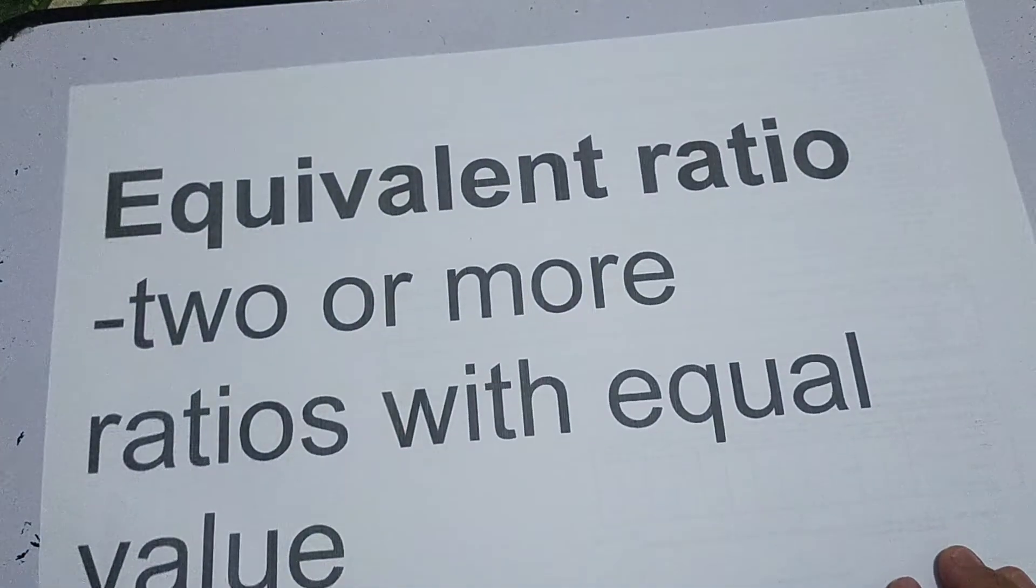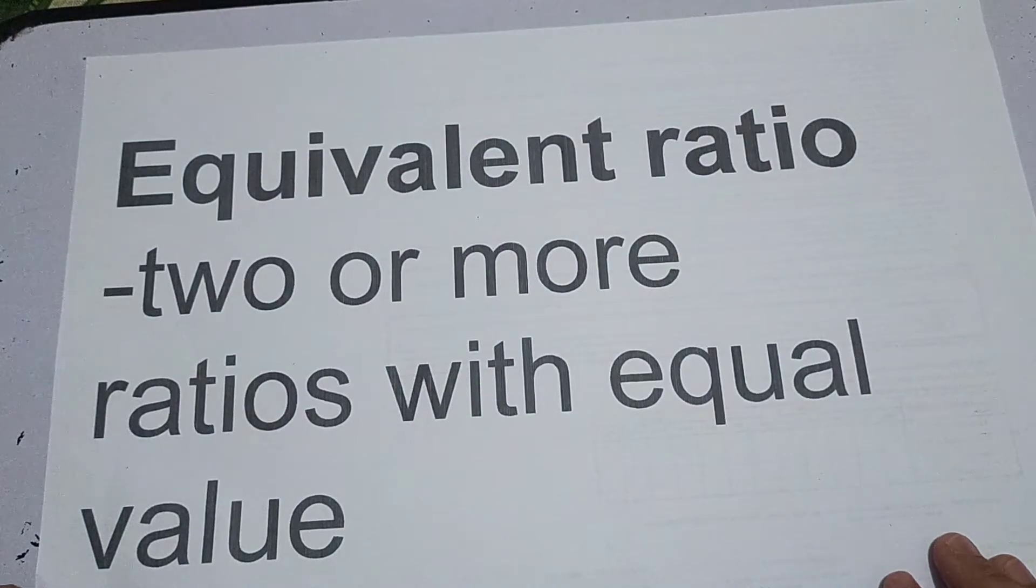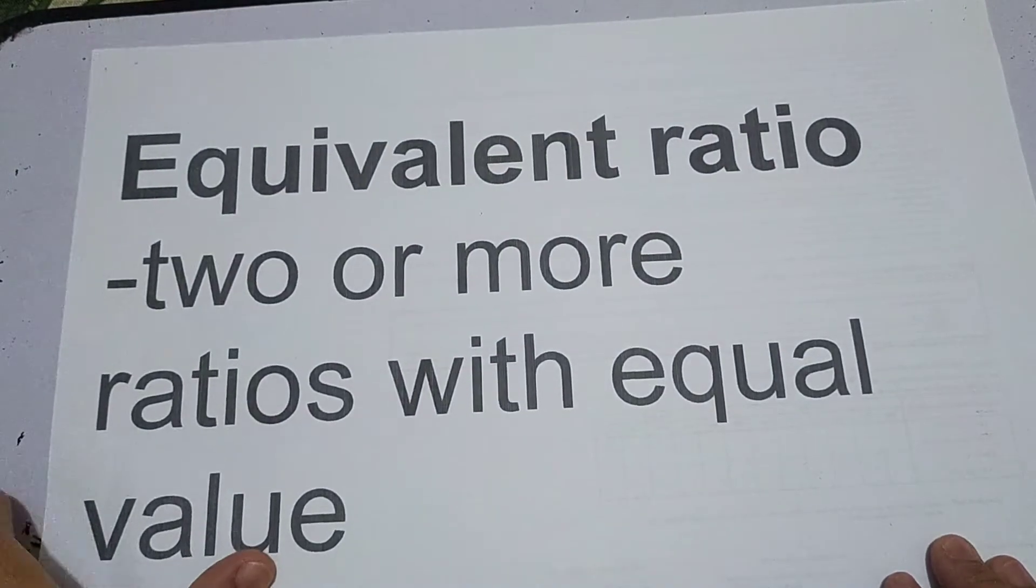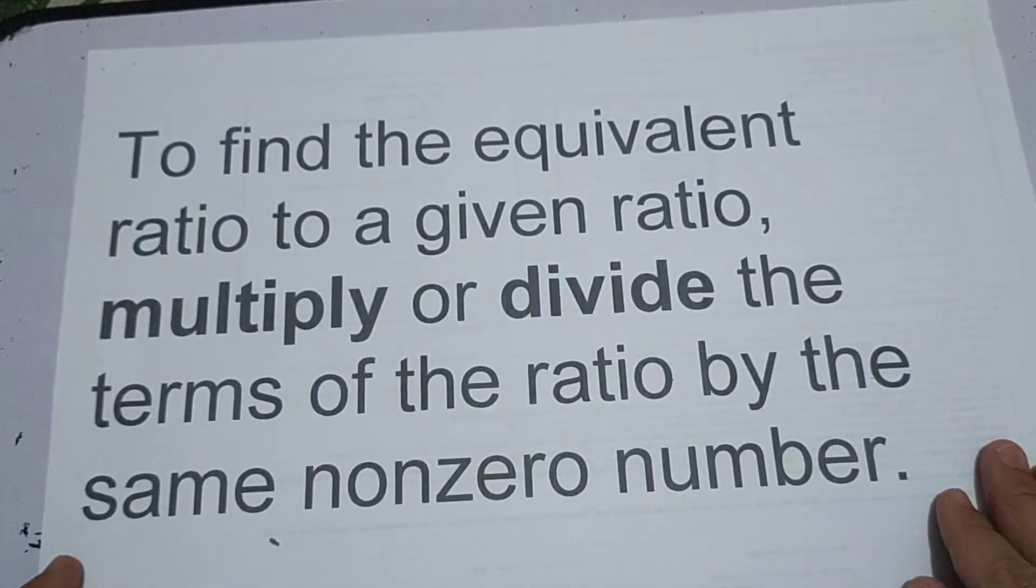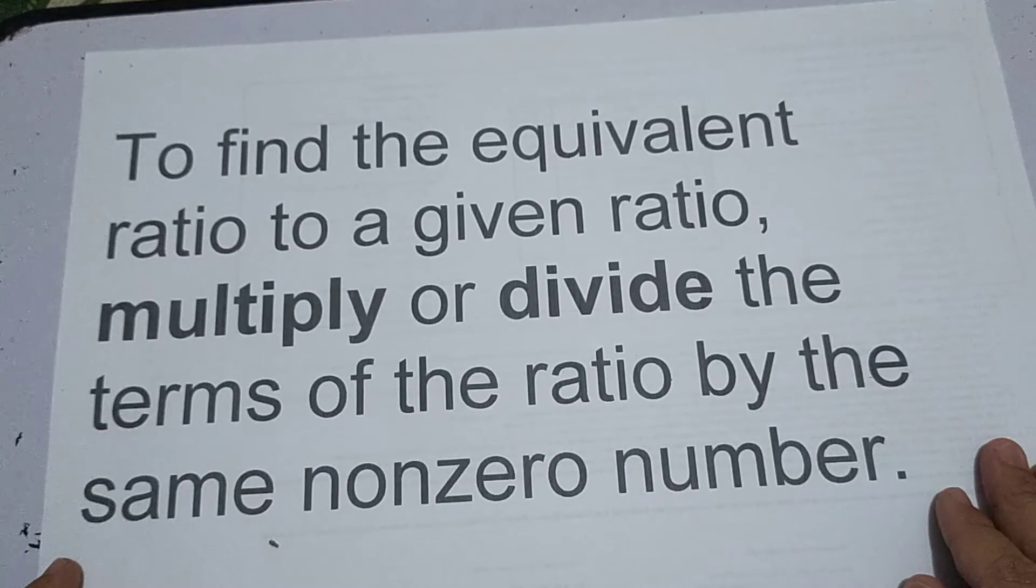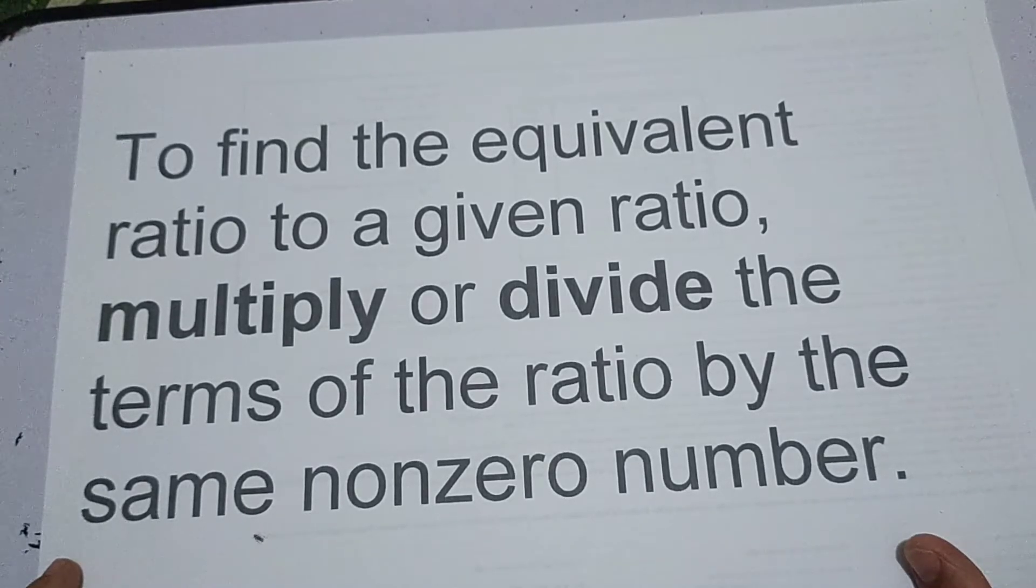So when we say equivalent ratio, it consists of two or more ratios with equal value. To find the equivalent ratio to a given ratio, multiply or divide the terms of the ratio by the same non-zero number.